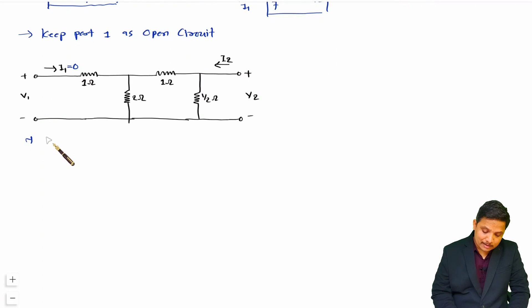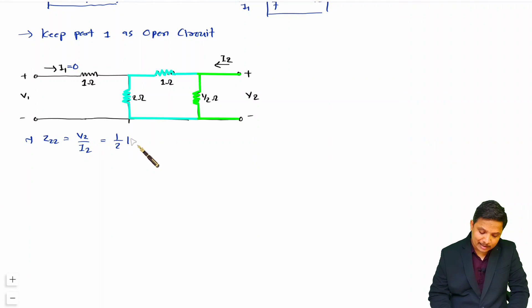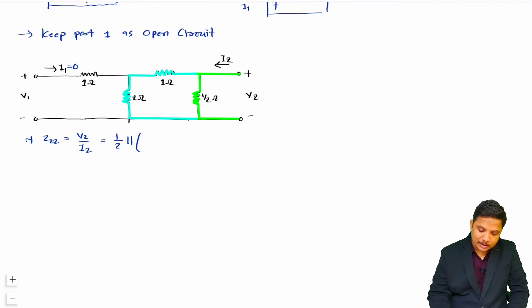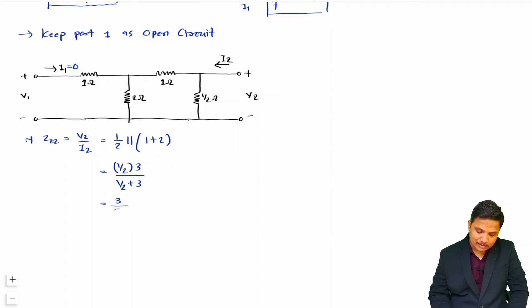Z22 is V2 by I2, which is the impedance seen at port 2. That is 1/2 in parallel with this circuit. Since current I1 is 0, we do not need to consider that resistor, so we have 1 in series with 2, giving 1 + 2 = 3. Therefore Z22 = (1/2) parallel with 3 = (1/2 × 3) / (1/2 + 3). Taking LCM of 2, we get 3 divided by (1 + 6) = 3/7. So Z22 = 3/7 ohms, the output or port 2 impedance.